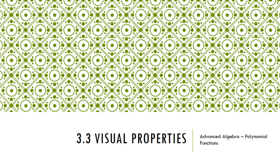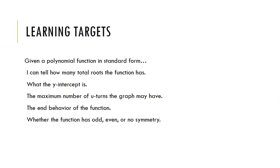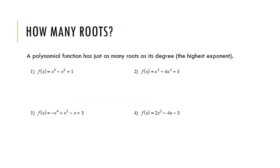This is a video for section 3.3: Visual Properties — properties you can get from a polynomial function just by looking at it written in standard form. The learning targets for this lesson are that, given a polynomial function in standard form, you can tell how many total roots the function has, what the y-intercept is, the maximum number of u-turns the graph may have, the end behavior of the function, and whether the function has odd, even, or no symmetry.